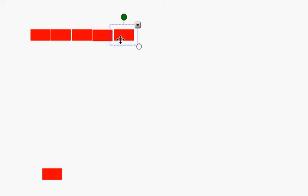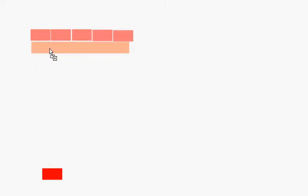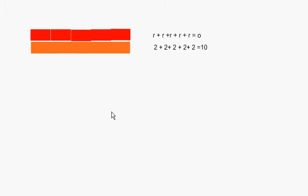By this time we've learned our colors, and so we know that the color 10 is equal to 5 of these. And so we can come up with a skip count — 2, 4, 6, 8, 10 — or 2 plus 2 plus 2 plus 2 plus 2 equals 10. We can write it as red plus red plus red plus red plus red equals an orange, or 2 plus 2 plus 2 plus 2 plus 2 equals 10.